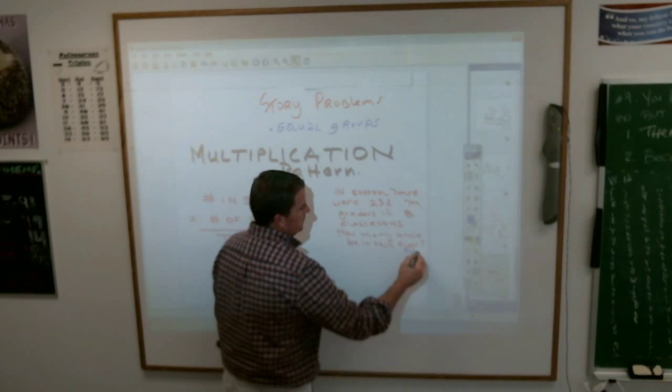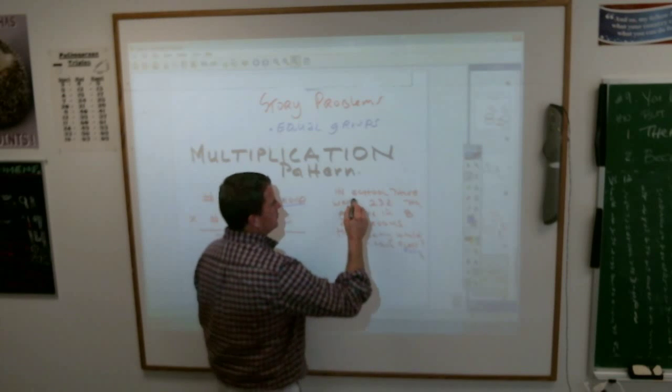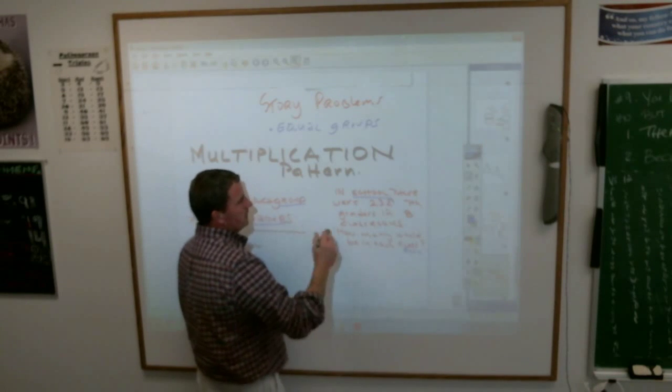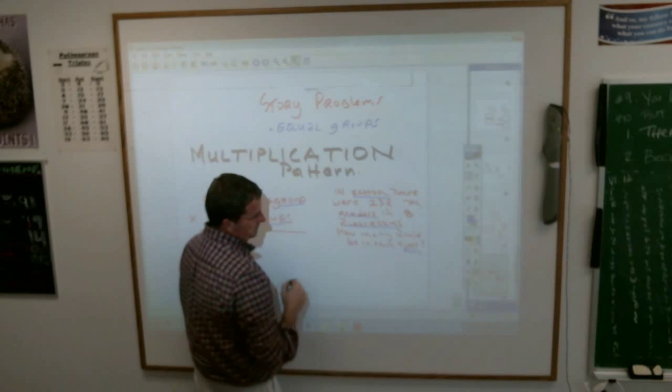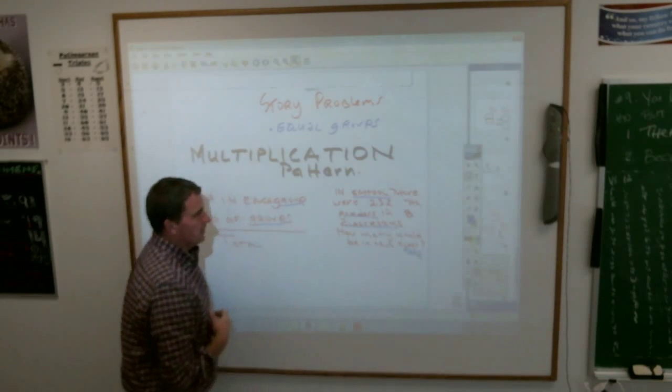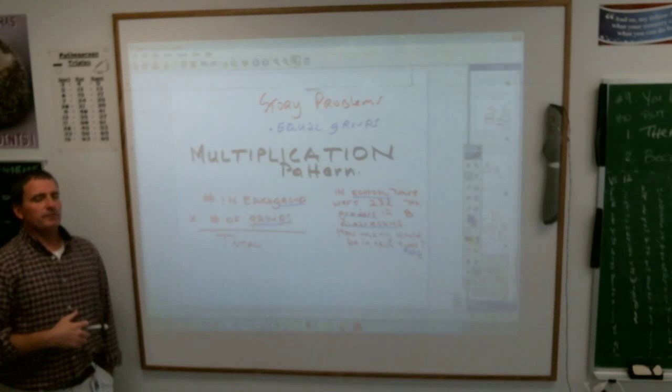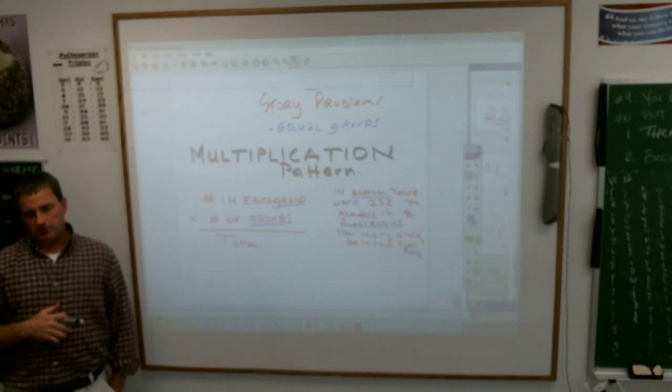Let's look at all the nouns there. That's school, right? That's a noun. There are seventh graders. That's a noun. Classrooms is a noun. And classrooms is a noun, I guess. Which one of those nouns is a group of something?